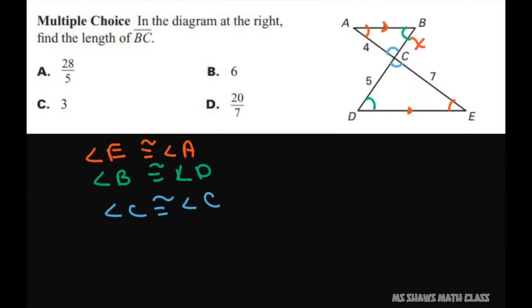So I'm going to write a similarity statement and write this as triangle ABC is similar, and now let's match up the angles. Angle A goes with angle E, B goes with D, and C is with itself.